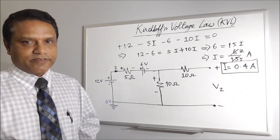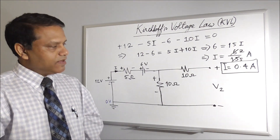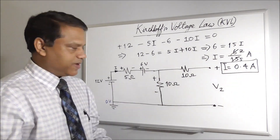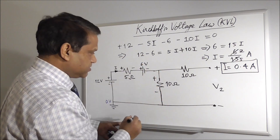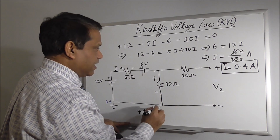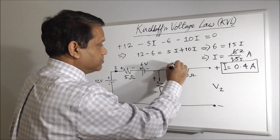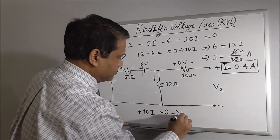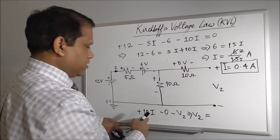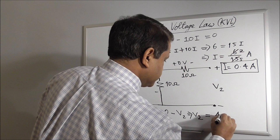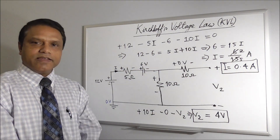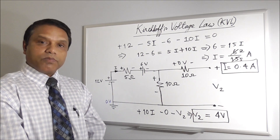So we found current using KVL — this is a very important technique we use very often. Now if we have to find V2, we apply KVL again in a loop. We can use this smaller loop. Starting here, this is a rise: plus 10I. There is no current through the open branch so that is 0 volt: minus 0, then minus V2, equals zero. Since I is 0.4, that means 0.4 times 10 = 4 volts. So we found this voltage using KVL. KVL is really useful and we will be using it in the future to solve more complicated circuits.